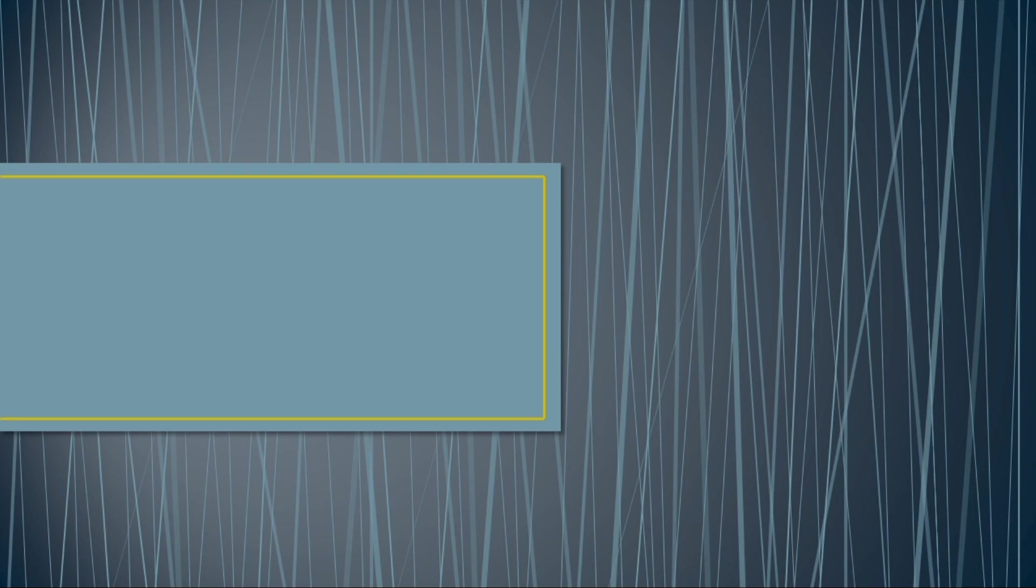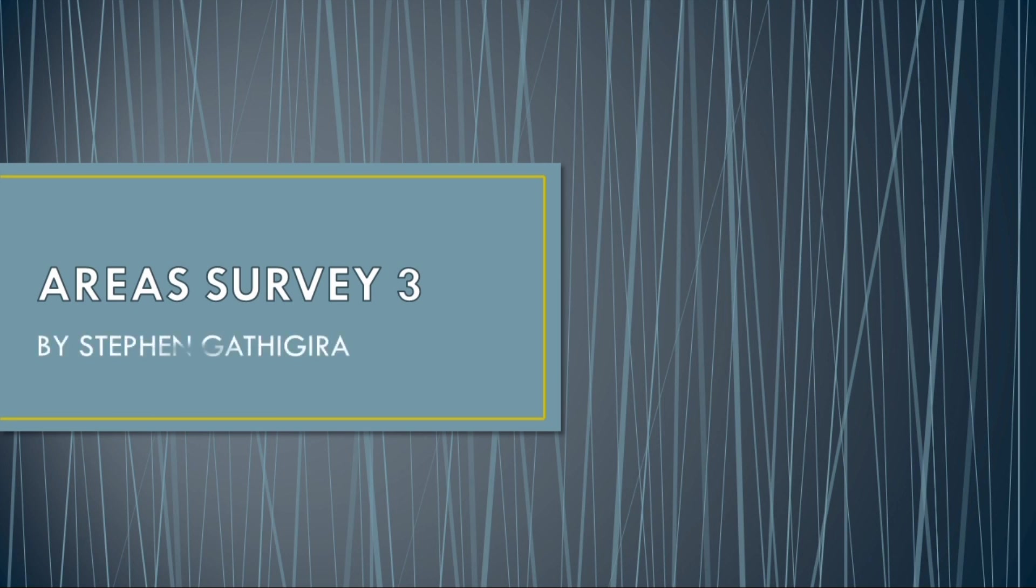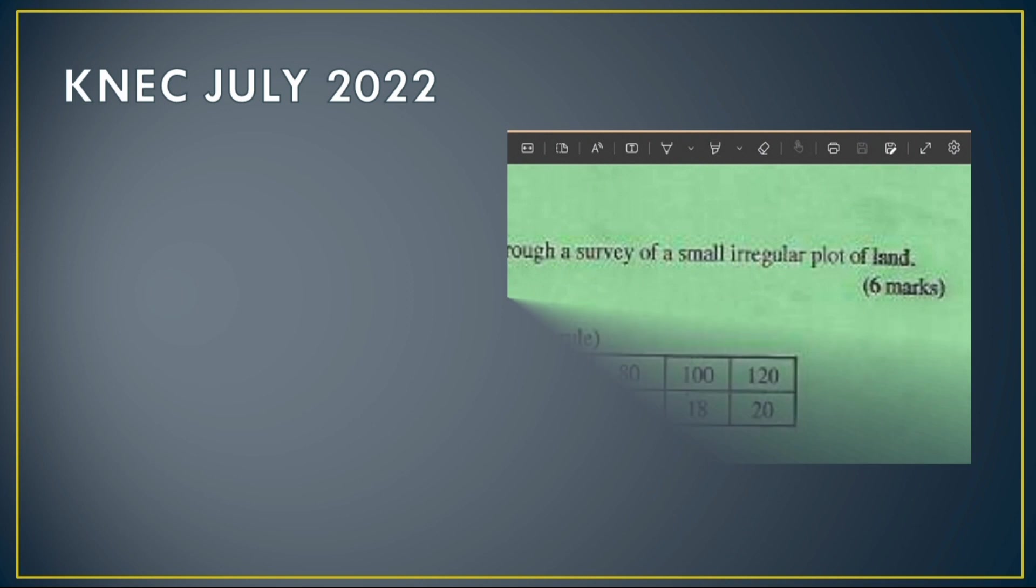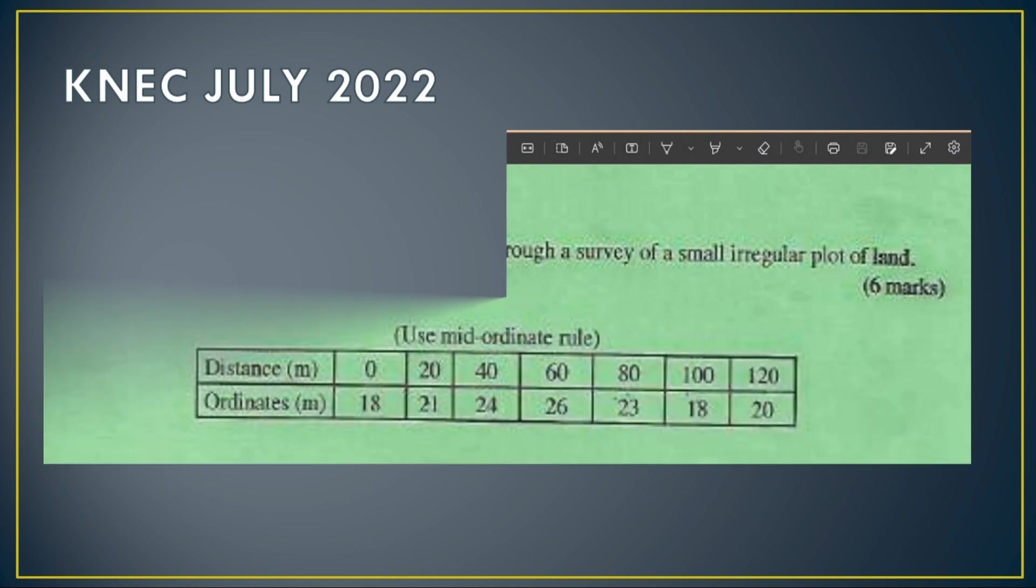Hi, let's look at our last question on the July 2022 series paper for the diploma in building, civil, and architecture. This is the shortest question I've ever done on areas and volumes, making it the easiest for you. Let's go ahead and see the question.